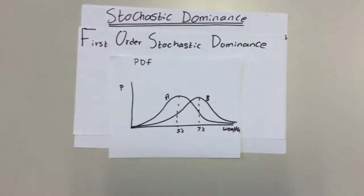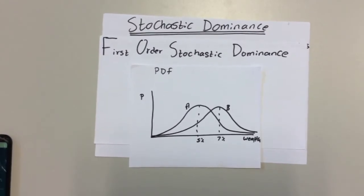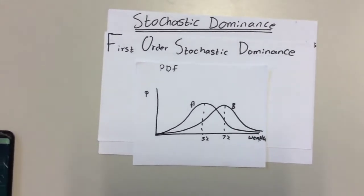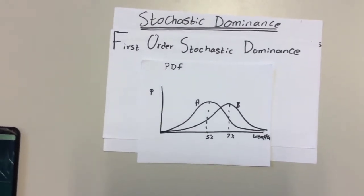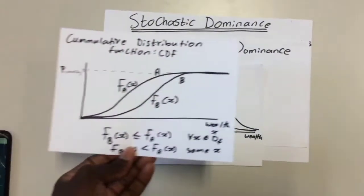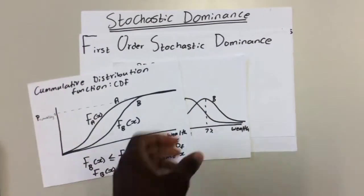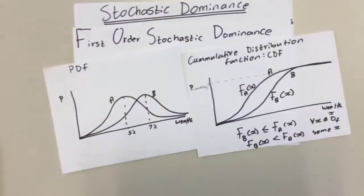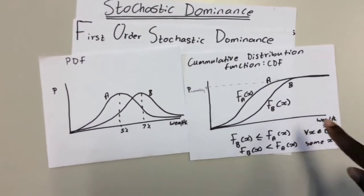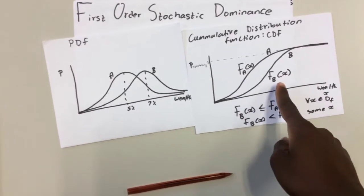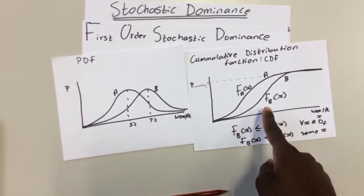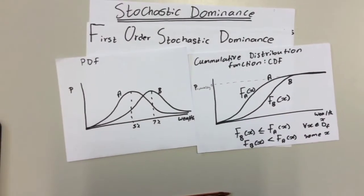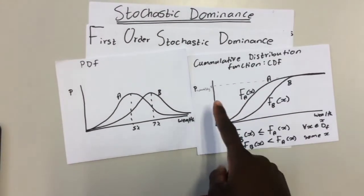But then how do you actually show this relationship? That's when you have to use first order stochastic dominance. In first order stochastic dominance you use the CDF or the cumulative distribution function. As you can see, the CDF of B is less than the CDF of A. We will have to choose B because for every point of the probability, the return for B is higher than that one of A.